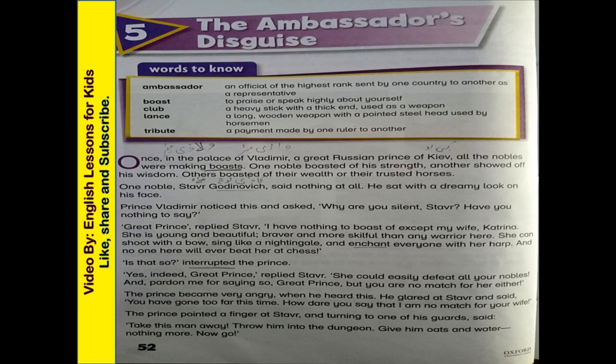Once in the palace of Vladimir, a great Russian prince of Kiev, all the nobles were making boasts. One noble boasted of his strength, another of his wisdom, others boasted of their wealth or their trusted horses. One noble, Steve Gardevich, said nothing at all. He sat with a dreamy look on his face. Prince Vladimir noticed this and asked, 'Why are you silent, Steve? Have you nothing to say?'